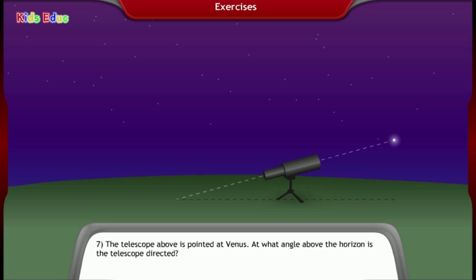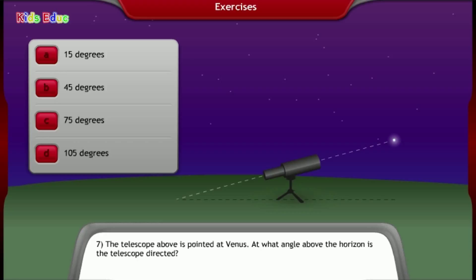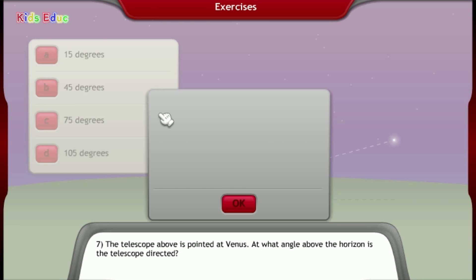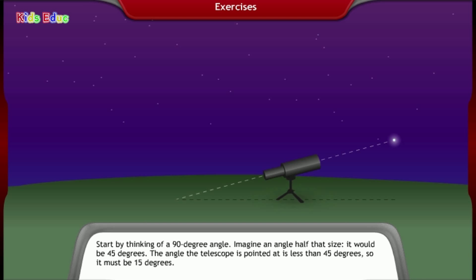Number 7, the telescope above is pointed at Venus. At what angle above the horizon is the telescope directed? 15 degrees, 45 degrees, 75 degrees, 105 degrees. 15 degrees. That's correct. Start by thinking of a 90 degree angle. Imagine an angle half that size. It would be 45 degrees. The angle the telescope is pointed at is less than 45 degrees, so it must be 15 degrees.